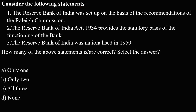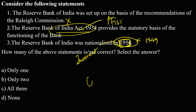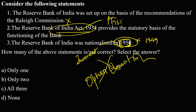The last question: Consider the following statements. Statement 1 — the Reserve Bank of India was set up on the basis of recommendations of the Rayleigh Commission — is incorrect. Statement 2 — the Reserve Bank of India Act 1934 provides the statutory basis for functioning of RBI — is correct. Statement 3 — Reserve Bank of India was nationalized in 1950 — is incorrect; it was nationalized in 1949. Whenever UPSC gives specific facts like dates or names of committees, those are generally incorrect — this is the option elimination technique.